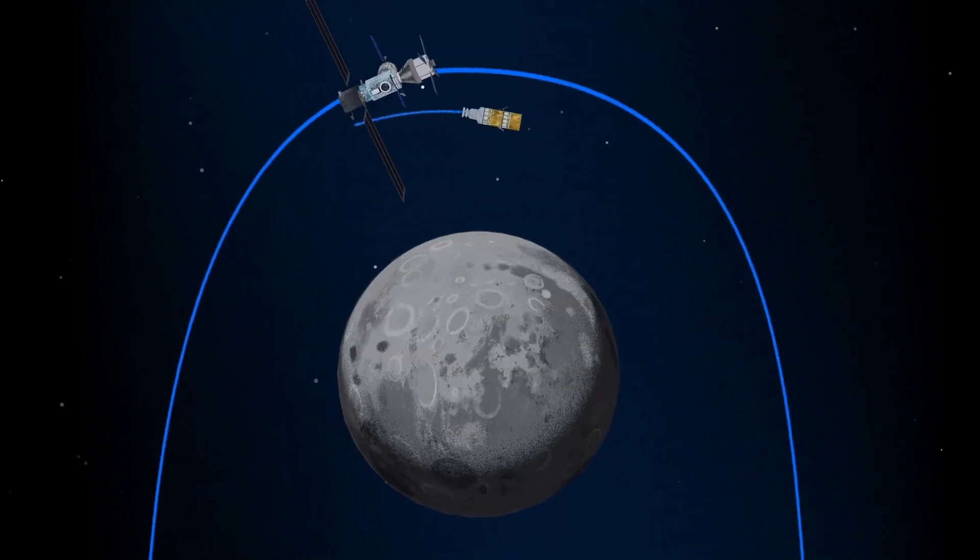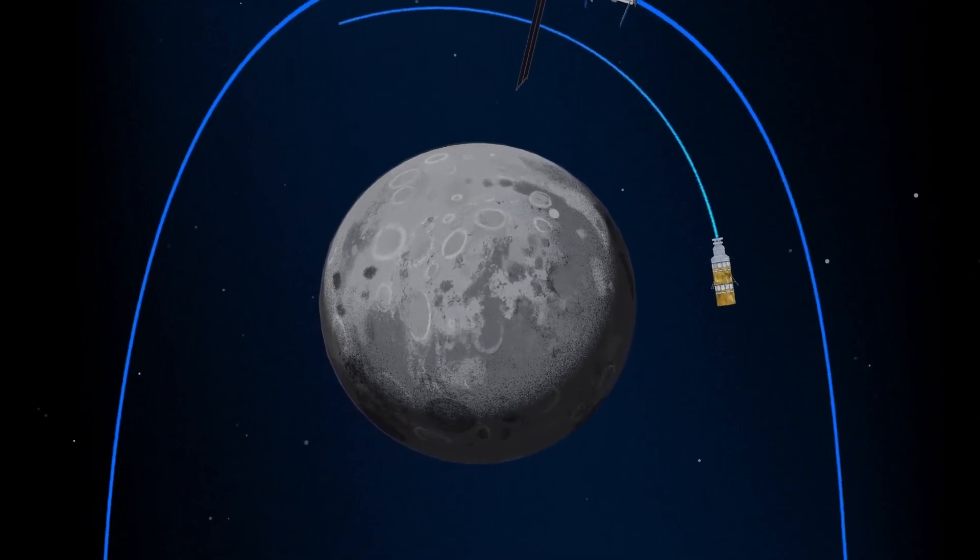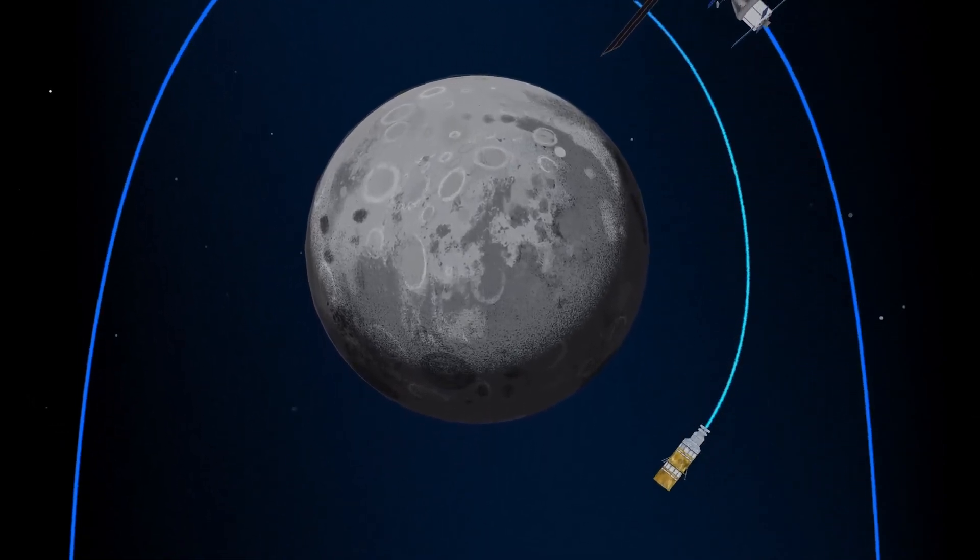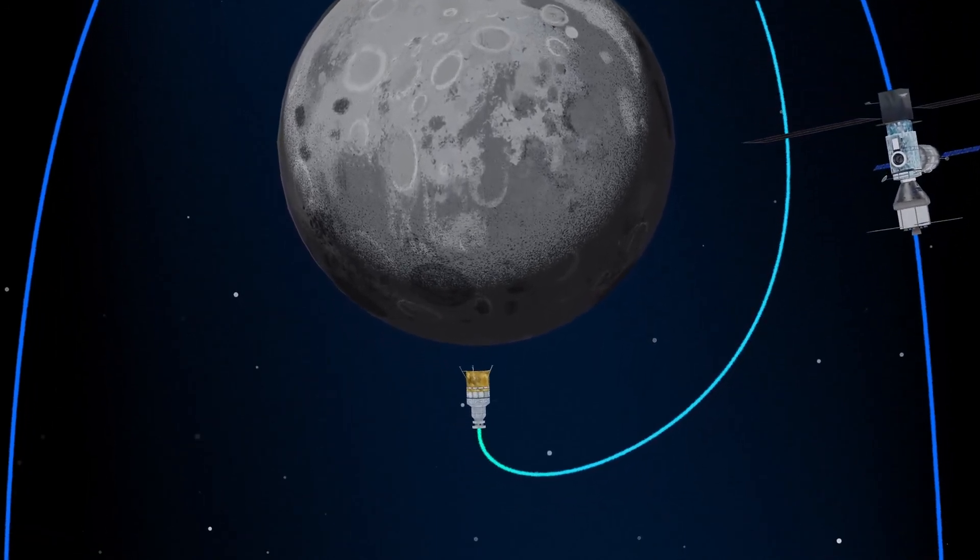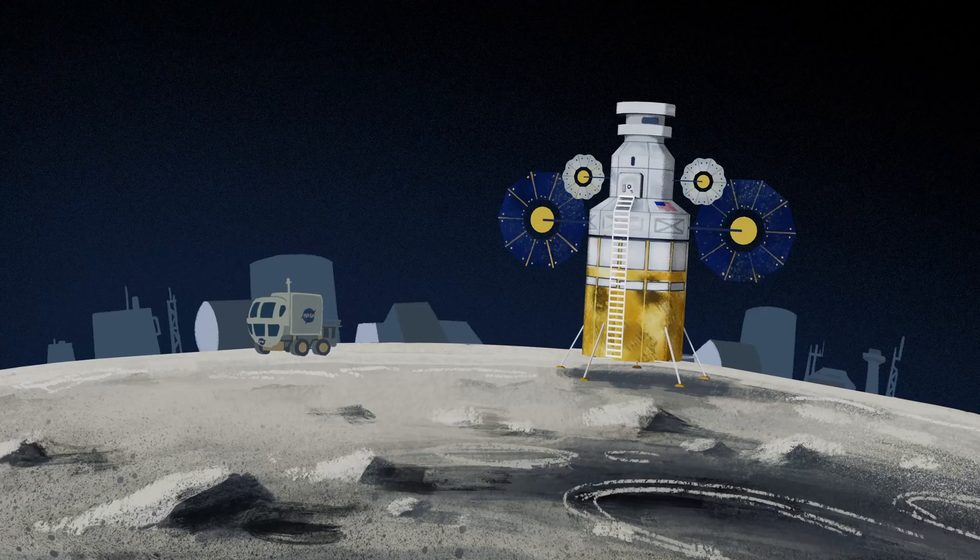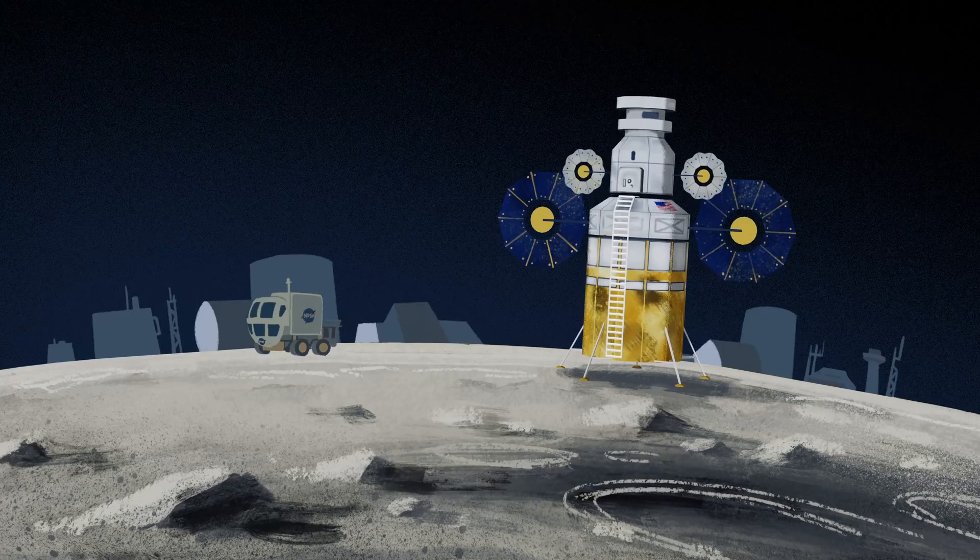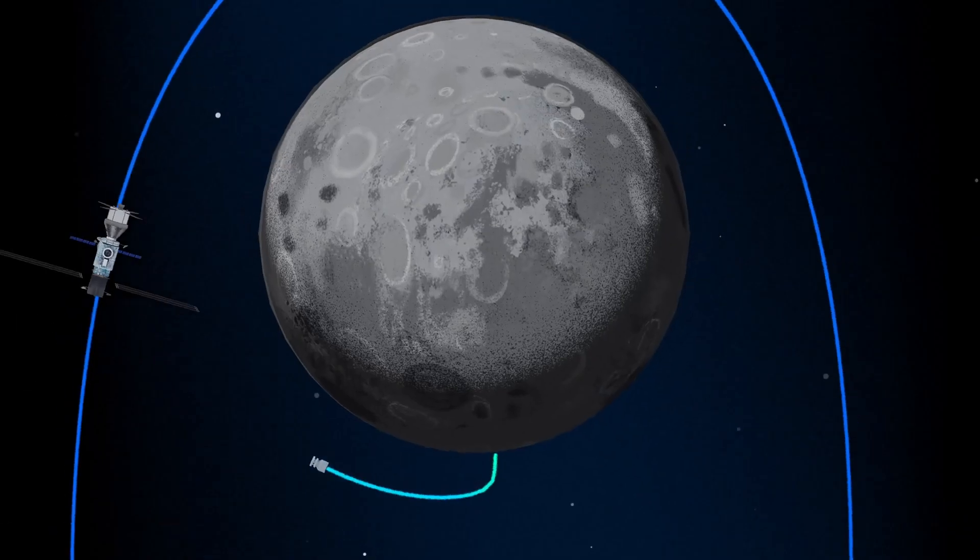The lunar lander system itself is built for three unique steps: descending from the halo orbit of Gateway down to a low lunar orbit, descending from low lunar orbit to the surface, and once the lunar mission is complete, launching from the surface of the Moon and ascending all the way back to the orbiting Gateway.